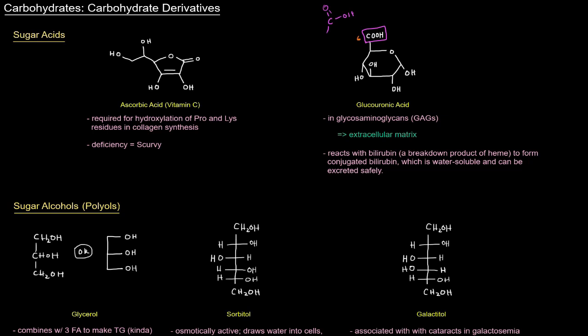Glucouronic acid shows up and is important in the structure of glycosaminoglycans or GAGs, which are important in the extracellular matrix and in connective tissues like cartilage. Glucouronic acid also reacts with bilirubin, which is a breakdown product of heme, to form conjugated bilirubin, which is water soluble and can be excreted safely.